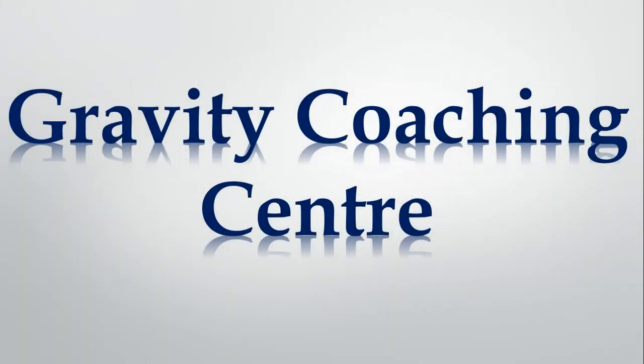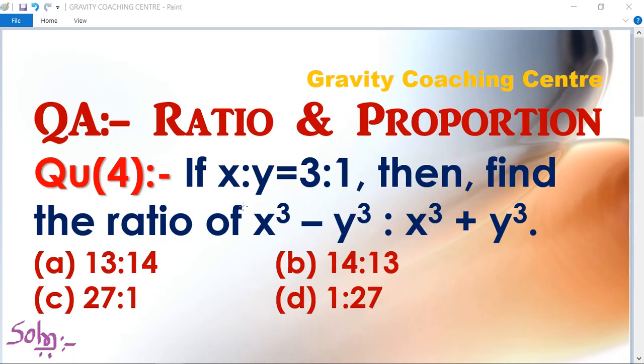Welcome to our channel, Gravity Coaching Centre. Quantitative Aptitude, Chapter: Ratio and Proportions, Question number 4. If x:y = 3:1, then find the ratio of x³ - y³ : x³ + y³. Options are (a) 13:14, (b) 14:13, (c) 27:1, (d) 1:27.